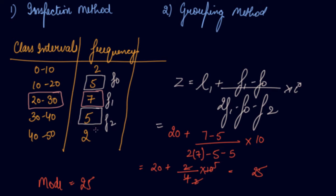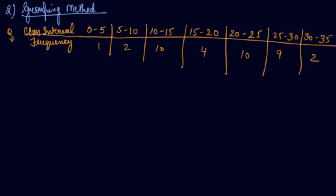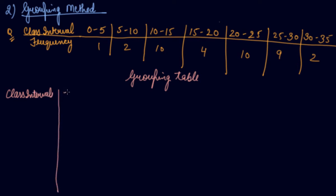This is the inspection method in the case of continuous series. Now let's do it using the grouping method. In this question, you are given class intervals and frequencies in the form of a continuous series. The first thing you do is apply the grouping method, so let's make the grouping table.